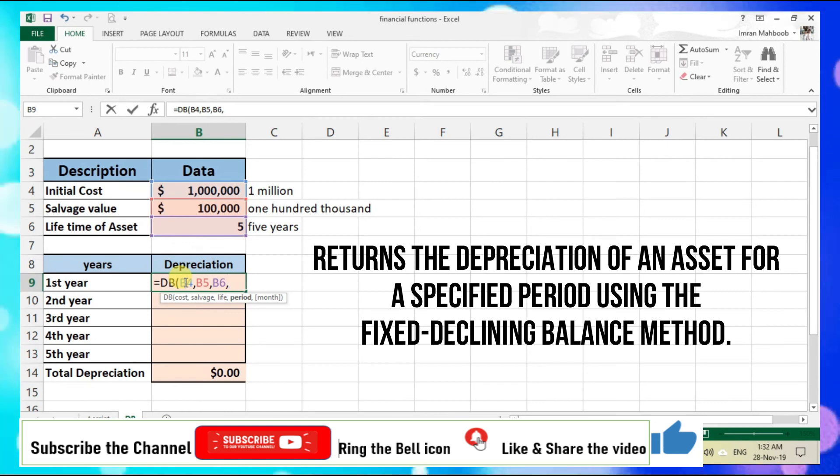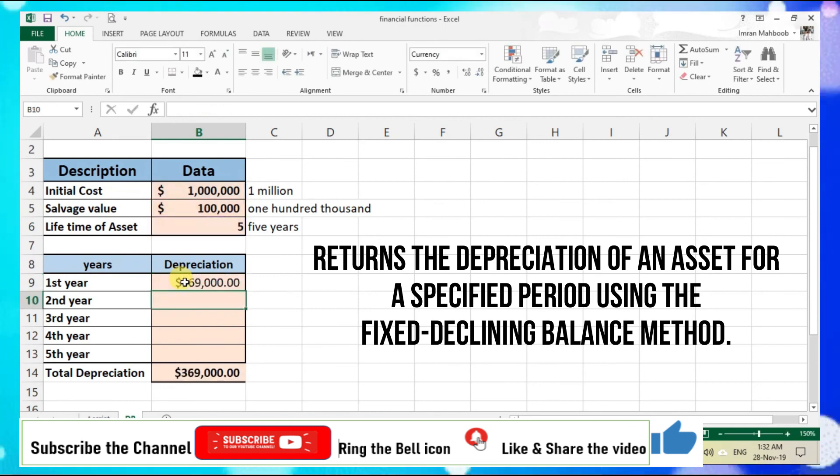Here we have to enter the period. As we assume that lifetime of asset is 5 years, so this is the first year, we will enter period as 1. There is no need to enter month because we are assuming that we are calculating the depreciation for the whole year. Close parenthesis, enter. Here we have the depreciation for the first year.